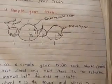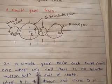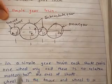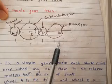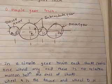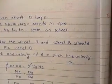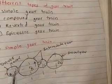In a simple gear train, each shaft carries one gear only and there is no relative motion between the axes of the shafts. Wheel A is the driver mounted on the driving shaft, and wheel D is mounted on the driven shaft. Wheels B and C are called intermediate gears, and they are required when the distance between the driving and driven shaft is large.